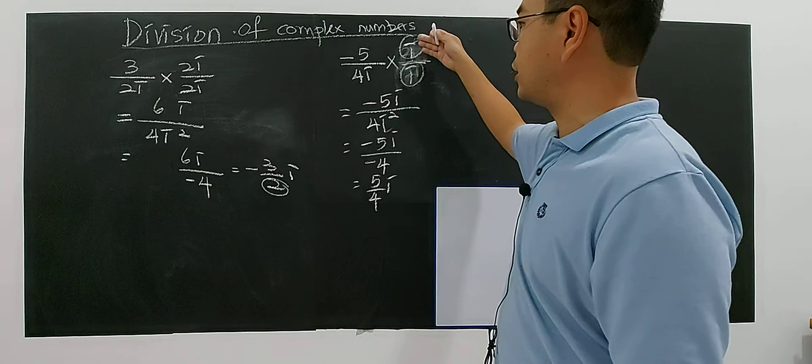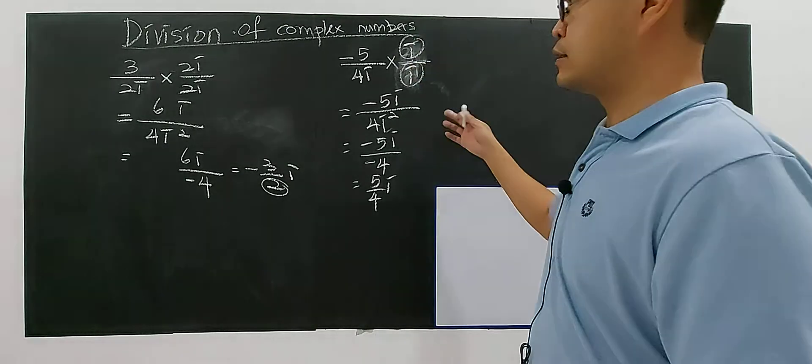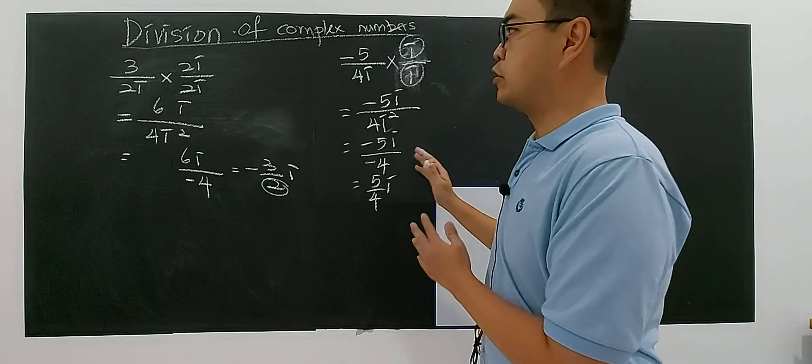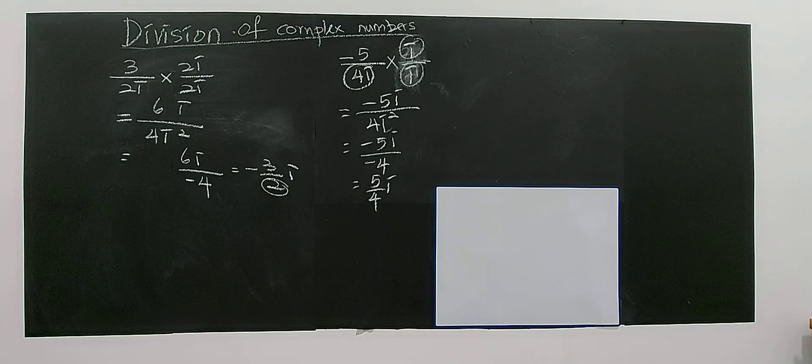Therefore you got 5 over 4i. The outcome will be still the same if you multiply with 3i over 3i, 4i over 4i, okay? This is how you deal with this type of division with imaginary number divided by an imaginary number.